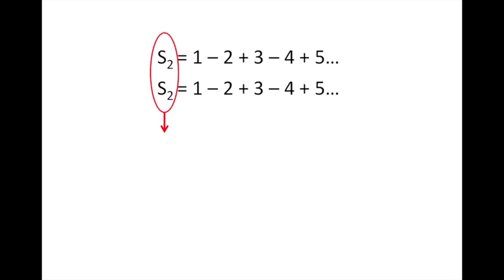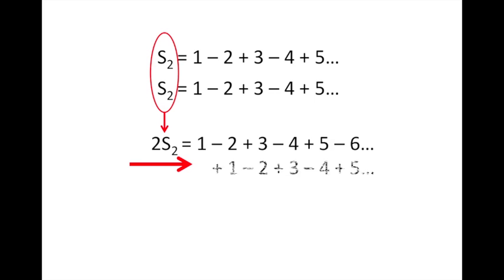S2 is our other equation: 1 minus 2 plus 3 minus 4 plus 5 and so on. Basically we're going to duplicate the equation, so 2S2 is now 1 minus 2 plus 3 minus 4 plus 5 minus 6 and so on. We're going to write it again, but this time we're going to indent it one slot, so it's the same equation just moved to the right one place: 1 minus 2 plus 3 minus 4 and so on.